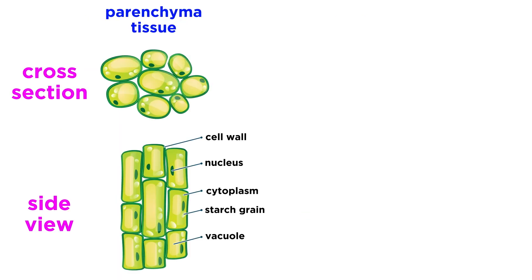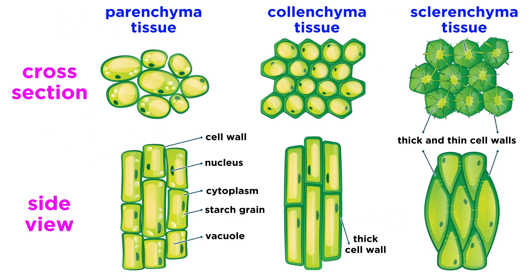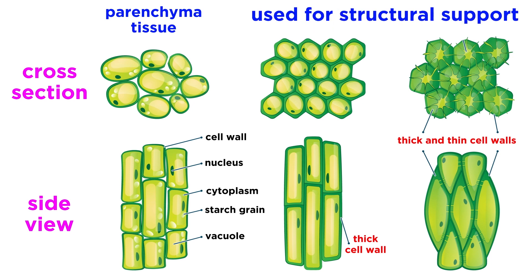The other two subtypes of ground tissue, ground calenchyma tissue and ground sclerenchyma tissue, are also composed of cells by the same names. As we now know, both calenchyma cells and sclerenchyma cells have thick cell walls made of cellulose, and in some cases lignin, which provides structure for a plant. Therefore, ground calenchyma and ground sclerenchyma tissues can be found throughout a plant wherever structural support is most important.